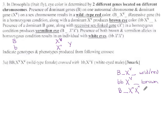And if you have the brown and vermilion alleles, so little b little b, little v little v, produces white.